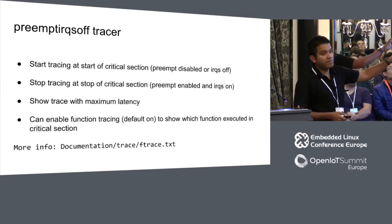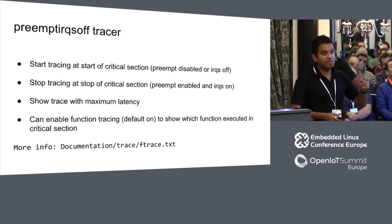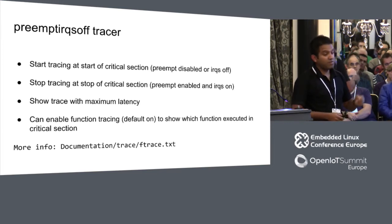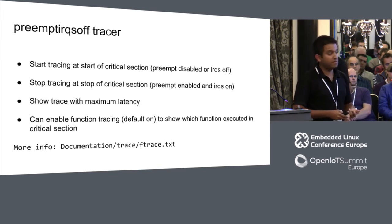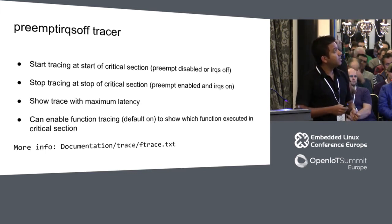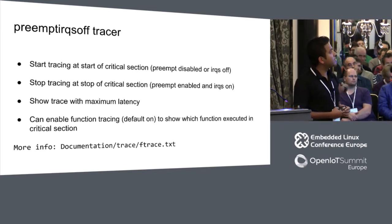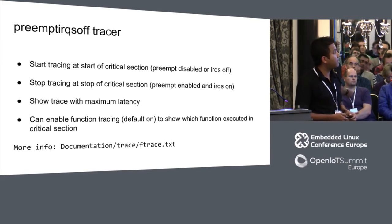A brief mention of the preempt_irqsoff tracer: it starts tracing when you either disable preemption or disable interrupts, and stops tracing when both are re-enabled. This covers both cases, and you can see the function trace of the maximum latency that occurred.